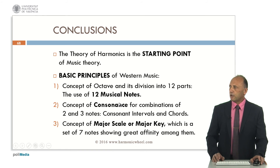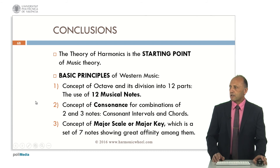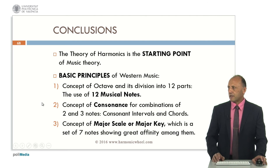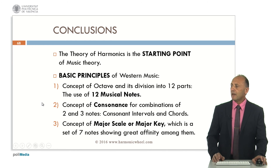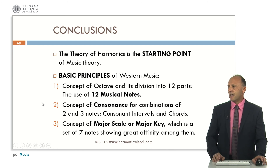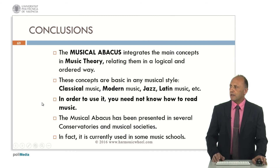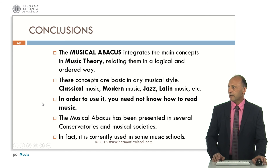As conclusions, the theory of harmonics is the starting point of music theory. Western music is based on three basic principles: first, the concept of octave and its division into twelve parts, meaning the use of twelve musical notes; second, the concept of consonance for combinations of two and three notes, that is consonant intervals and consonant chords; third, the concept of major scale or major key, which is a set of seven notes showing great affinity among them. The musical abacus integrates the main concepts in music theory, relating them in a logical and ordered way.